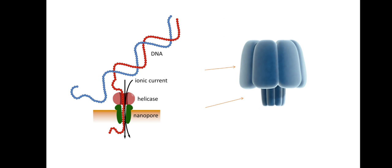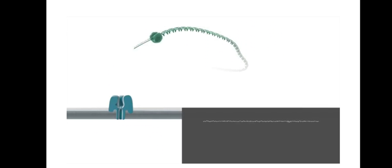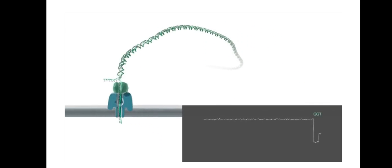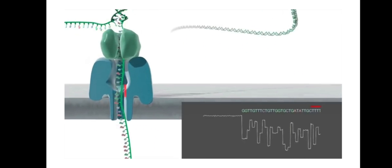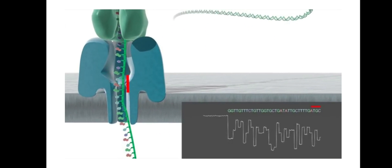A flow of ions through the pore creates a current, and each base blocks the flow to a different degree. The adapter molecule, which is orange in color in the diagram, keeps the bases in place long enough so that they can be identified electronically.